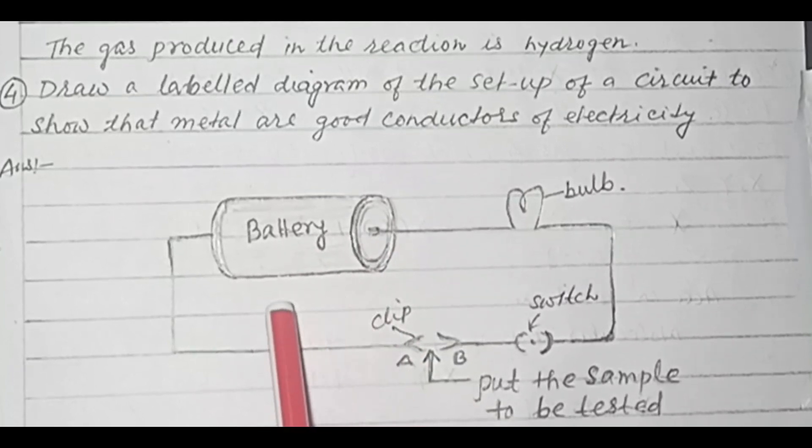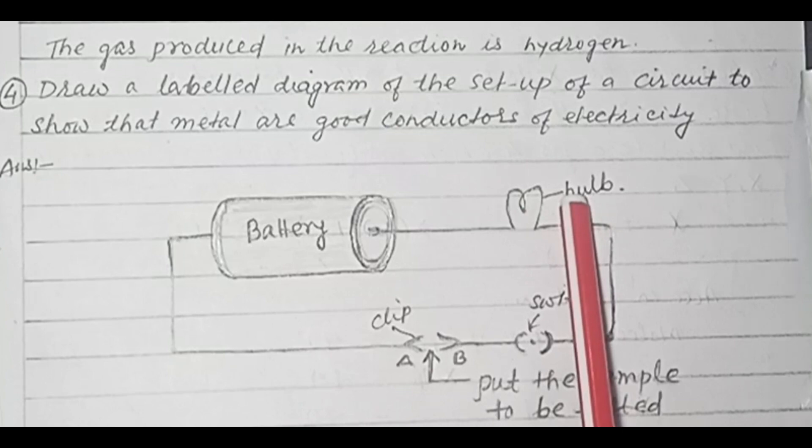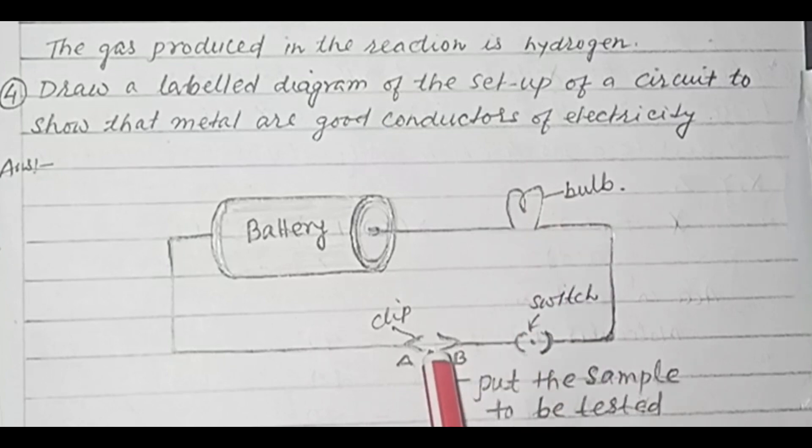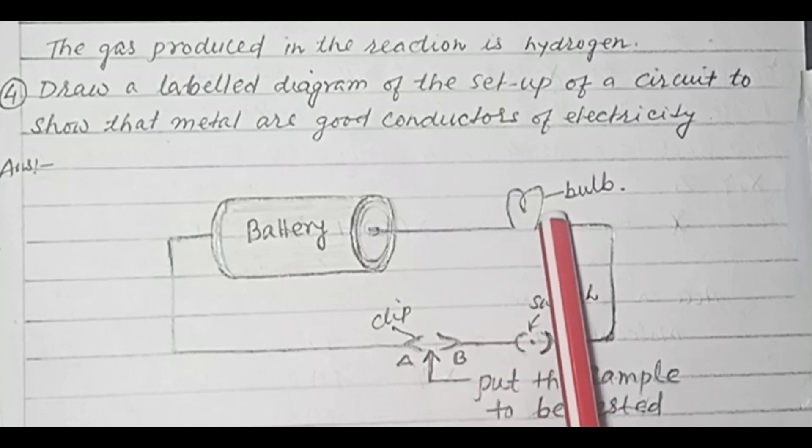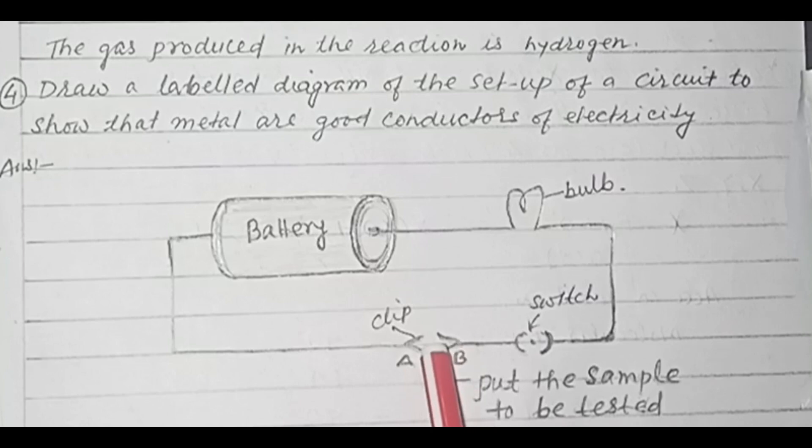In this circuit, the sample to be tested is put. When the sample is put and the bulb glows, then we say that the sample is a metal. But if the bulb does not glow, then the sample placed here is a non-metal.